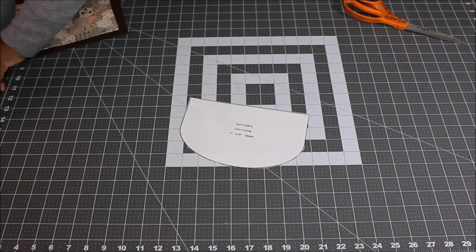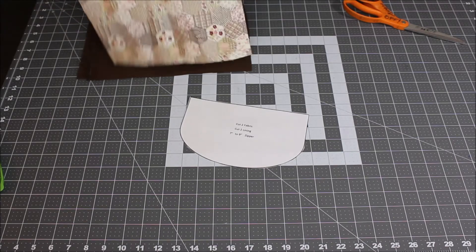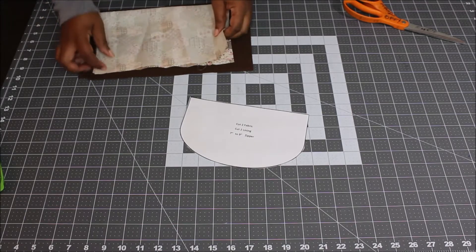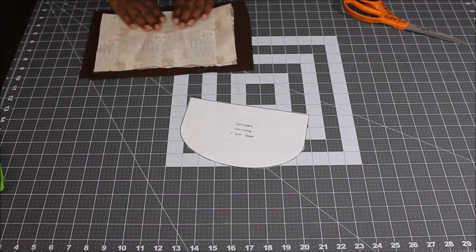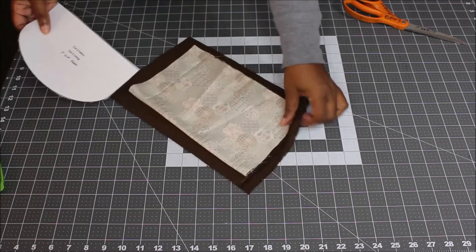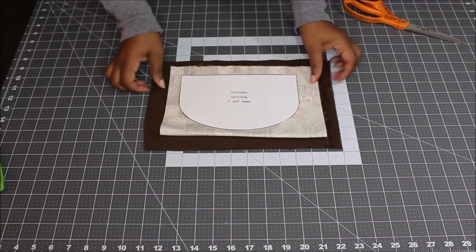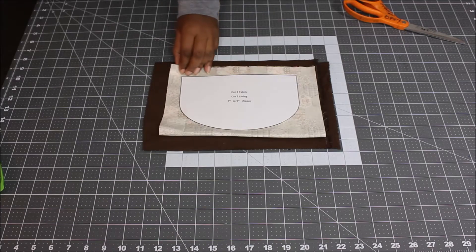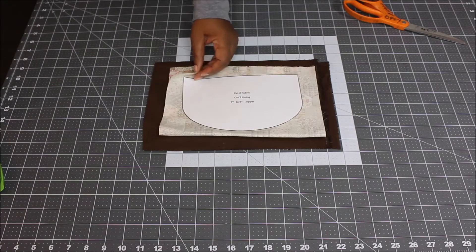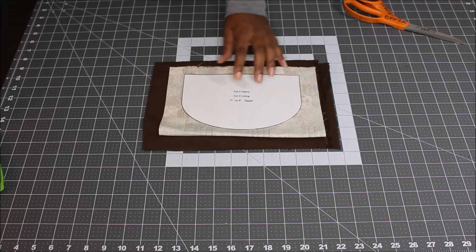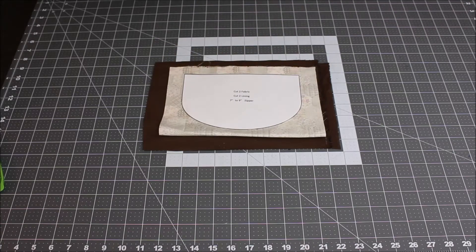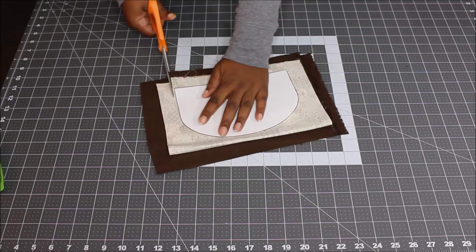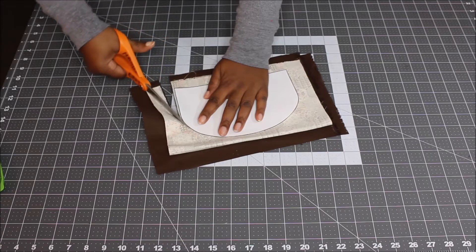Next thing you're going to do is take your fabric and cut out your fabric and your lining pieces using that template. I'm going to cut mine at the same time just to save time for the video. You can use pattern weights to hold your template down. I'm just going to use my hand. You want to cut two pieces for your fabric and two pieces for your lining.